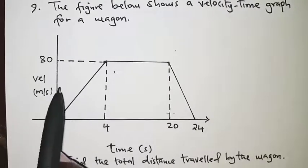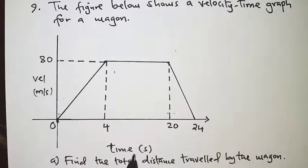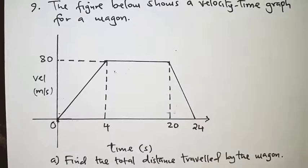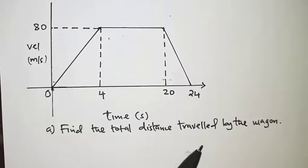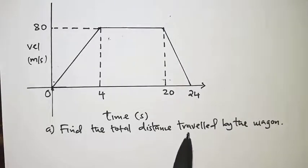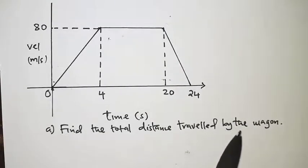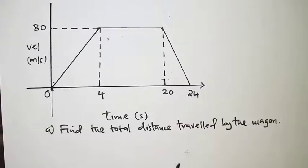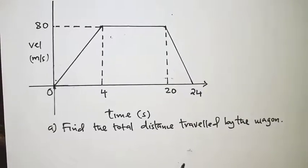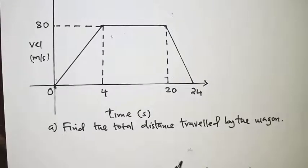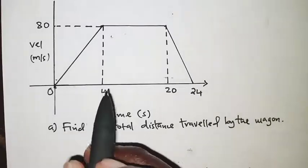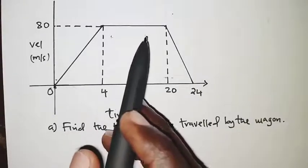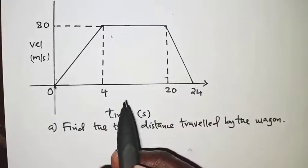Here we have velocity against time. From the graph we are required to answer the question: find the total distance traveled by the wagon. From a velocity-time graph, when you are asked to calculate the total distance, what we simply do is get the area under the graph.